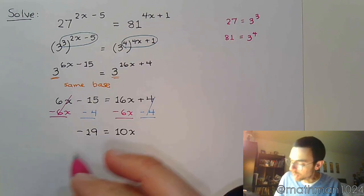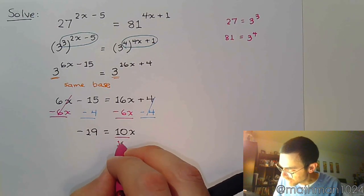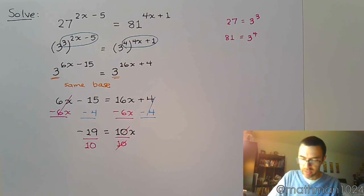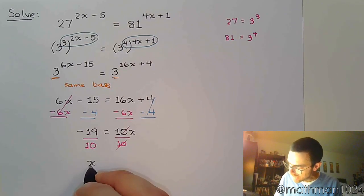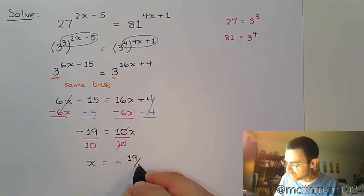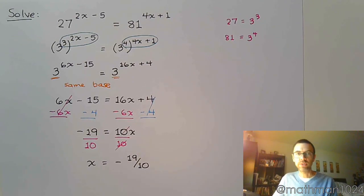And we have negative 19 is equal to 10x. All right. One step away from finishing the problem. So, divide both sides by 10.